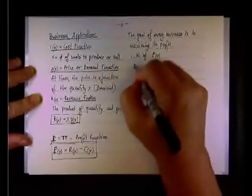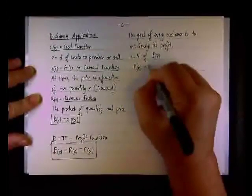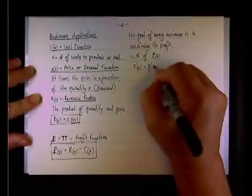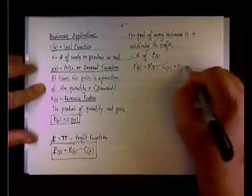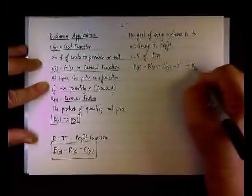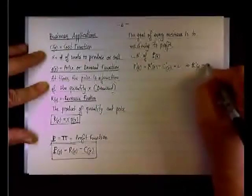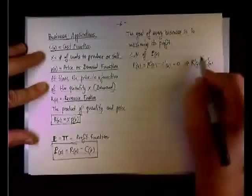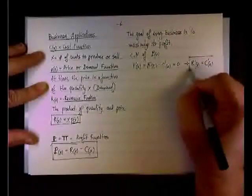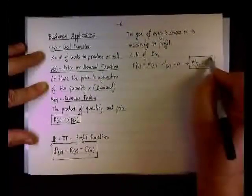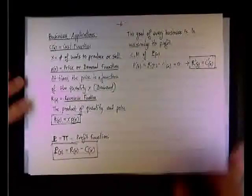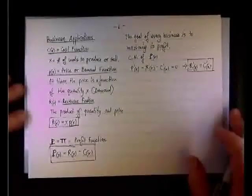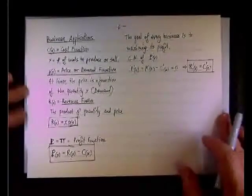And here's an interesting result. P prime of x, being R prime minus C prime, you want it to equal zero. The outcome is R prime equals C prime. So this is an interesting result. If you want to maximize the profit, then the derivative of the revenue equals the derivative of the cost.